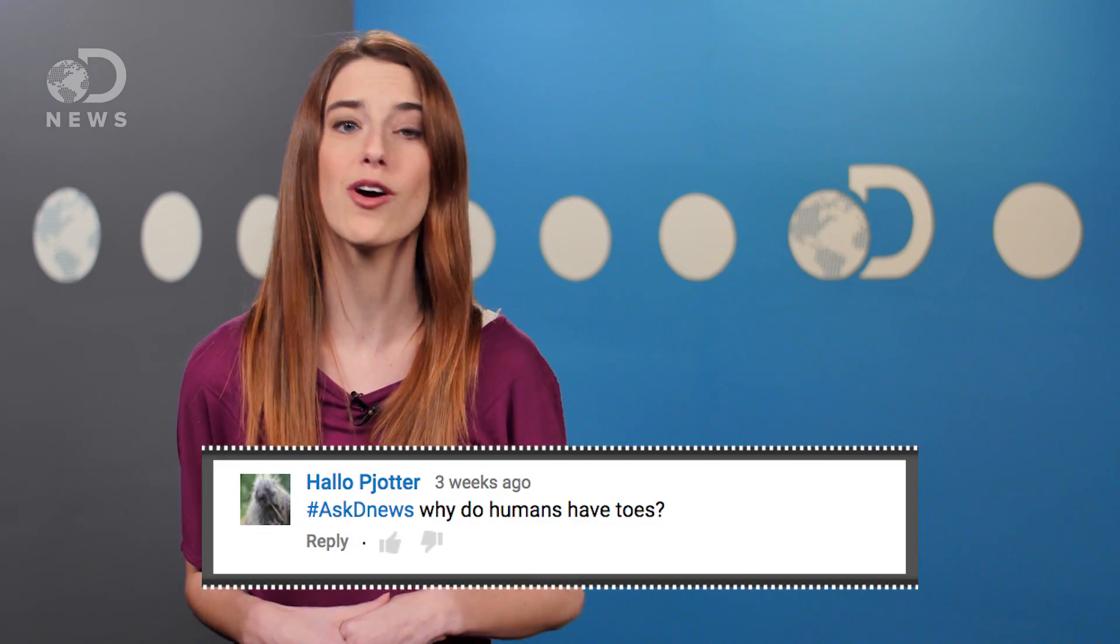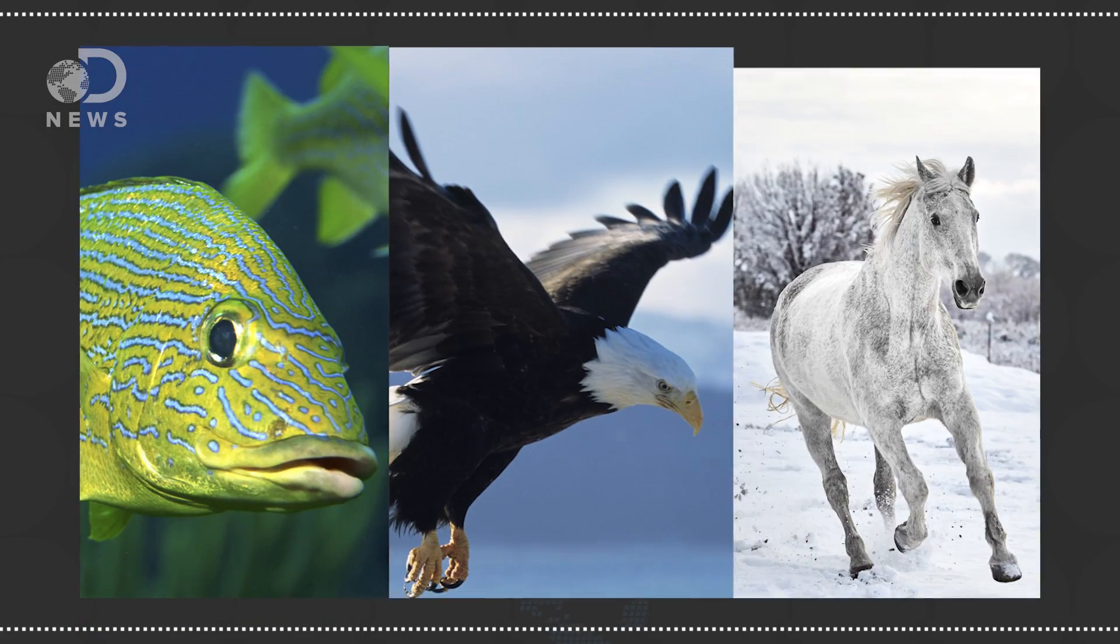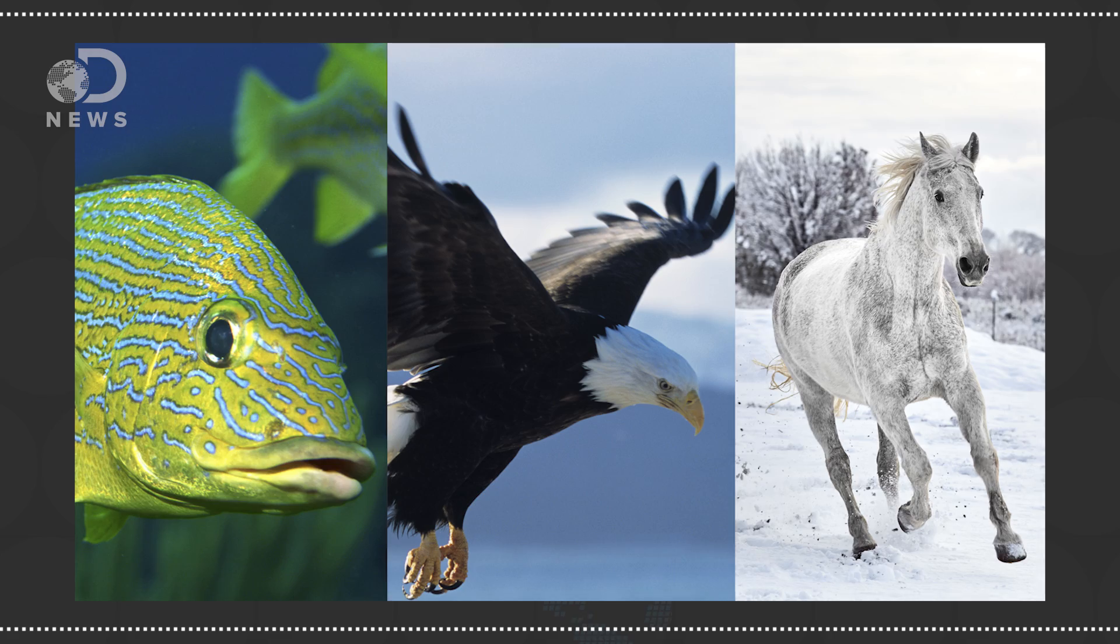Well, Halopajotr asked us how our toes evolved and that's a good question. Toes likely evolved from the same bones that became fins, wings, or hooves in other species. The dominating scientific theories are that fingers and toes are exclusive features of tetrapods, or vertebrates with limbs. But according to one study, toes may have evolved even before our fishy ancestors left the ocean.